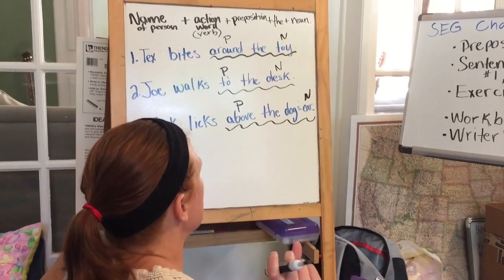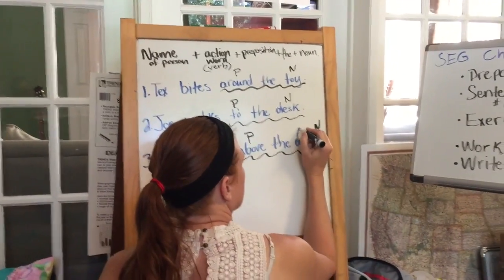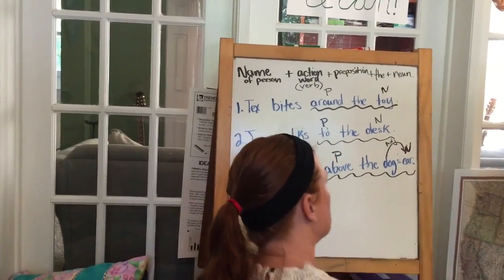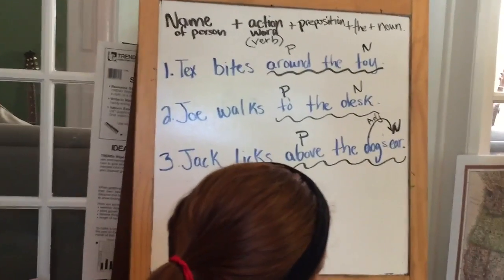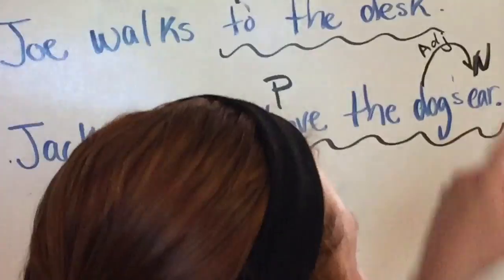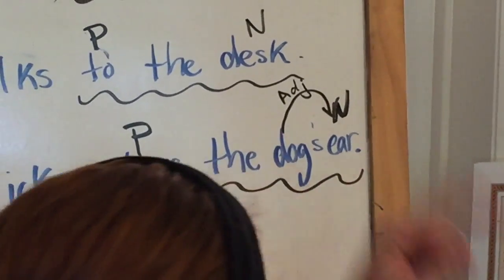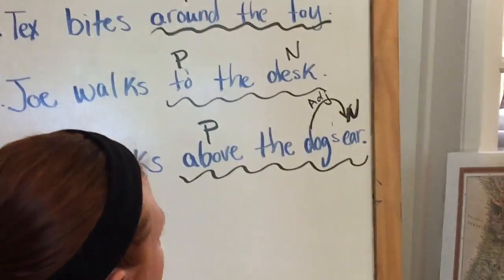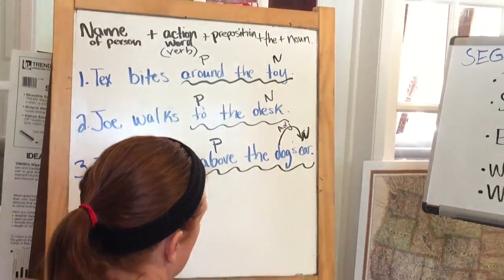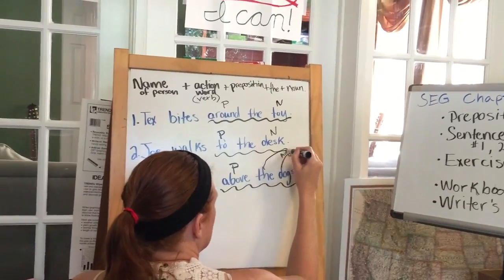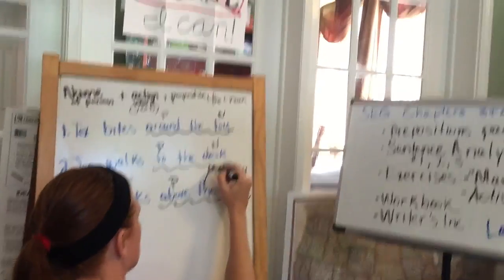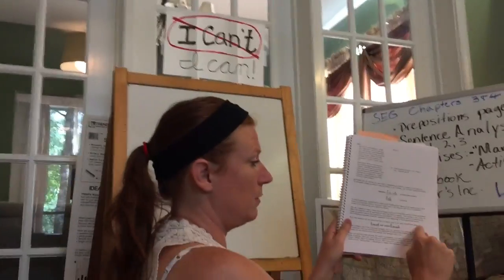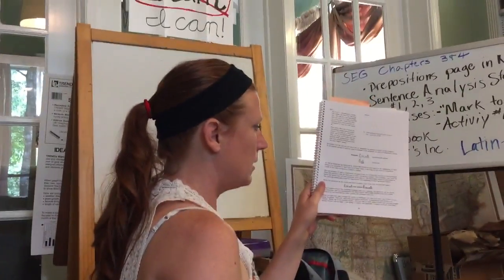Do you remember how to mark adjectives from last week? You point from the adjective to the noun it's describing and put ADJ on the loop, because adjective is to 'throw' — you're throwing a word onto the noun. What is 'the'? It's an adjective — it modifies the noun 'ear.' So it's another adjective for 'ear.' Page 17, at the bottom, talks about making another exercises page.